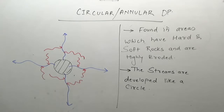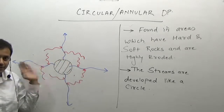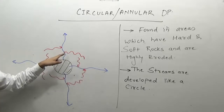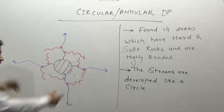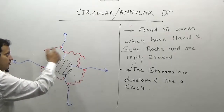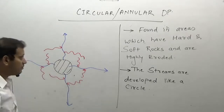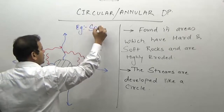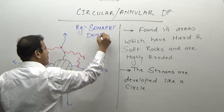In the circular or annular drainage pattern, the main river originates from the dome and flows in different directions, but the tributaries follow the softer rocks which have been eroded and join the streams at angles such that one complete circle is formed. Such a drainage pattern is known as a circular drainage pattern. An example is the drainage pattern of Sonapet dome, Uttarakhand.